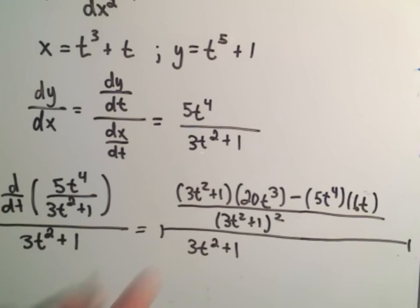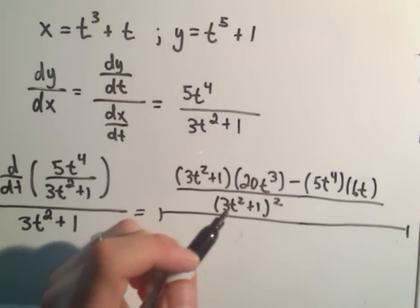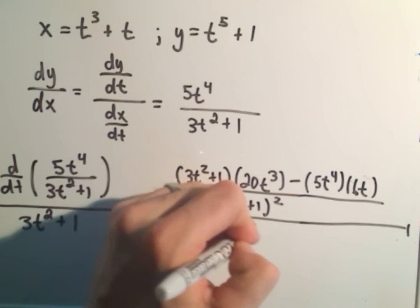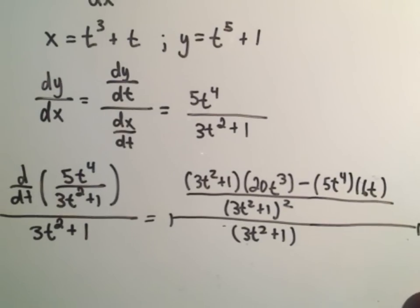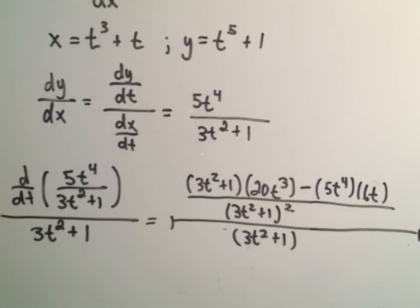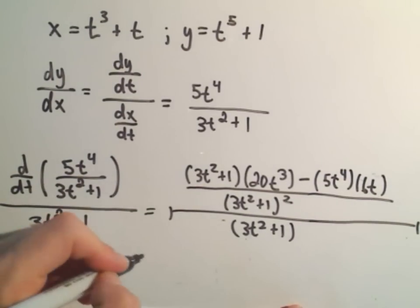Alright, so scoot that over, make our fraction look a little better here. 3t squared plus 1. Alright, now it's just a matter of cleaning up this fraction here.